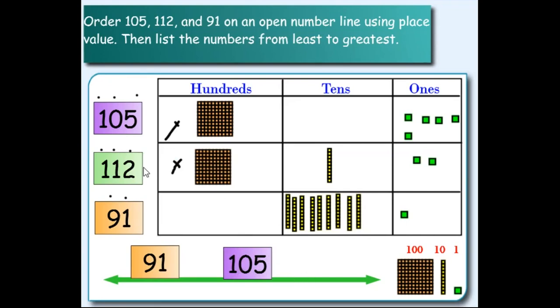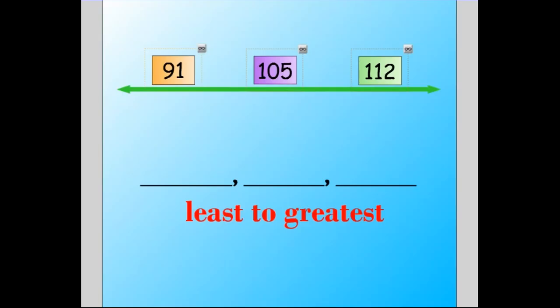The number 112 is the only number that's left and that will be the greatest value of the three. Next step, we are going to list our numbers in order from least to greatest. Since the number line is arranged from least to greatest already, we're going to write down the numbers in the same exact order as they are on the number line.